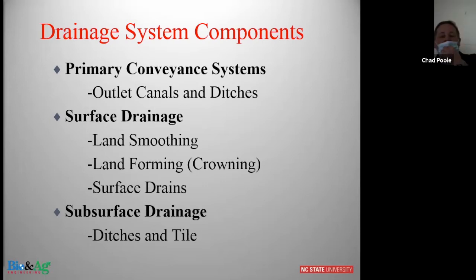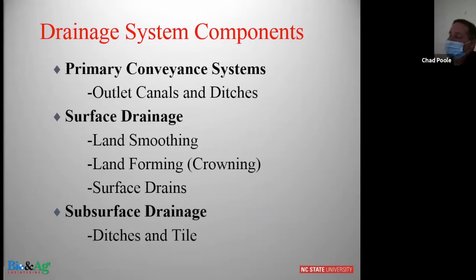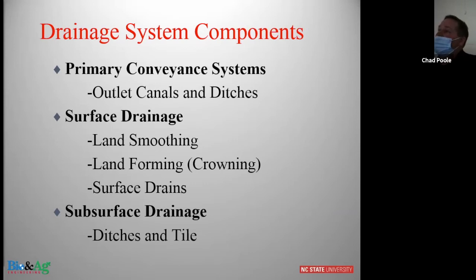Surface drainage is highly important. It's classified as land smoothing — many of you have participated in cost-share programs with the division of soil and water conservation that funds land smoothing. Another form is land forming or crowning, where we shape fields to have a crowning effect to get water off the field. Surface drains — every one of us likely uses those. We can do precision grading correctly where you don't disturb the topsoil to the point that you don't need surface drains, but there will always be somewhere in a field you'll still need to employ a surface drain.